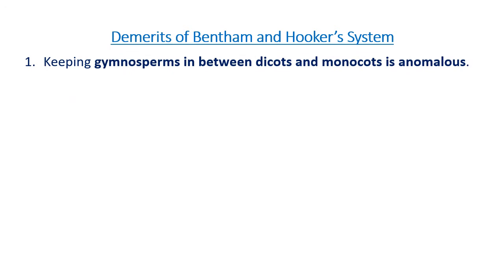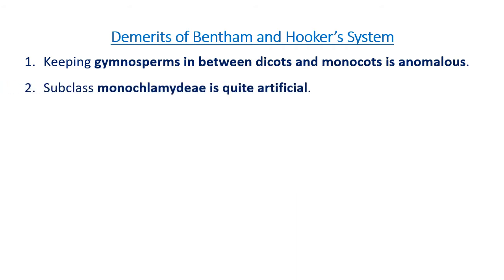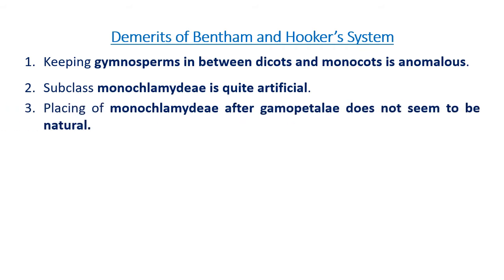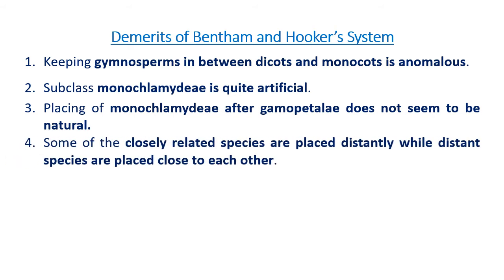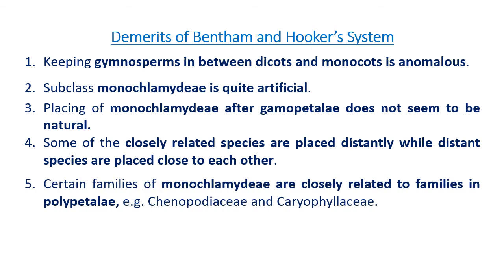The demerits of the Bentham and Hooker system: keeping gymnosperms in between dicots and monocots is an anomaly. Subclass Monochlamydae is quite artificial, and placing Monochlamydae after Gamopetalae does not seem to be natural. Some closely related species are placed distantly while distant species are placed close to each other. Certain families of Monochlamydae are closely related to families in Polypetalae, for example Chenopodiaceae and Caryophyllaceae.